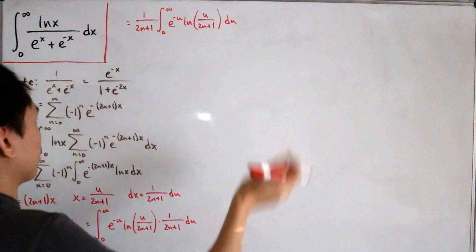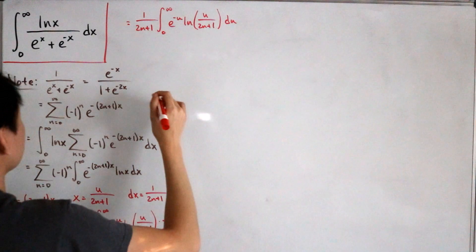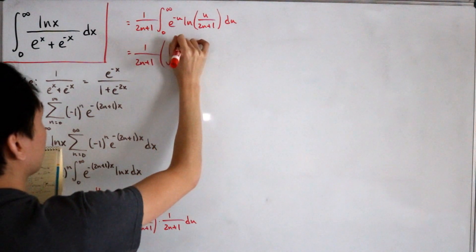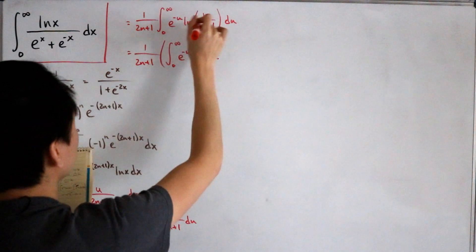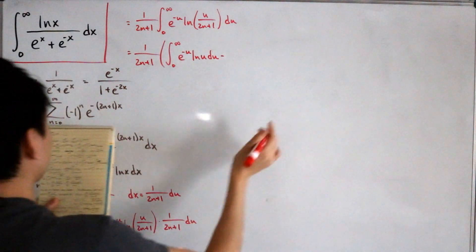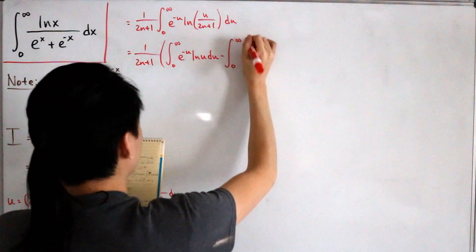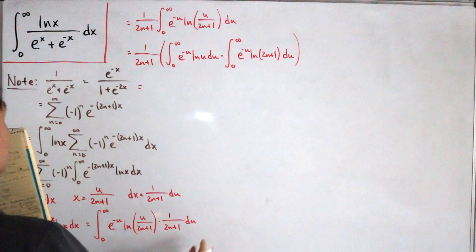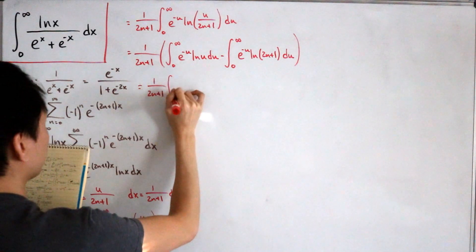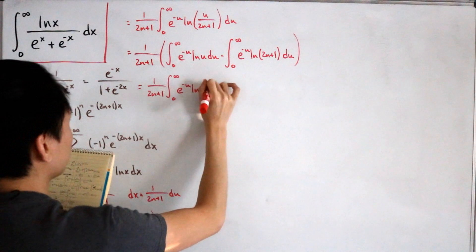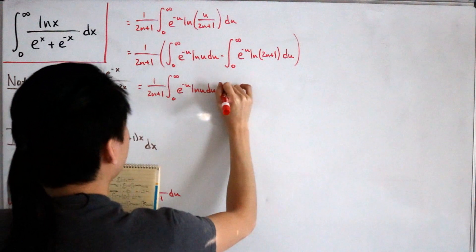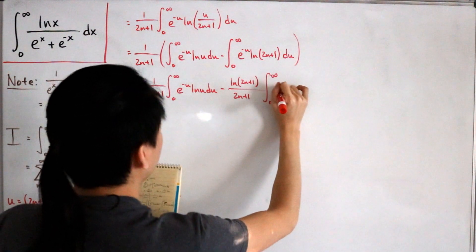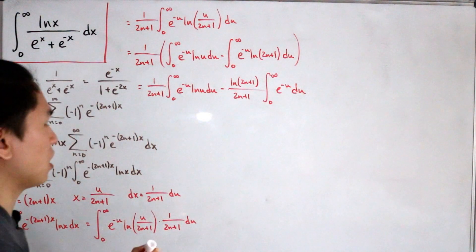We apply logarithm properties: ln(u/(2n+1)) = ln(u) − ln(2n+1). Using linearity, we distribute, giving 1/(2n+1) times [the integral from 0 to infinity of e^(-u)·ln(u) du, minus the integral from 0 to infinity of e^(-u)·ln(2n+1) du]. Since ln(2n+1) is constant, it factors outside the second integral.